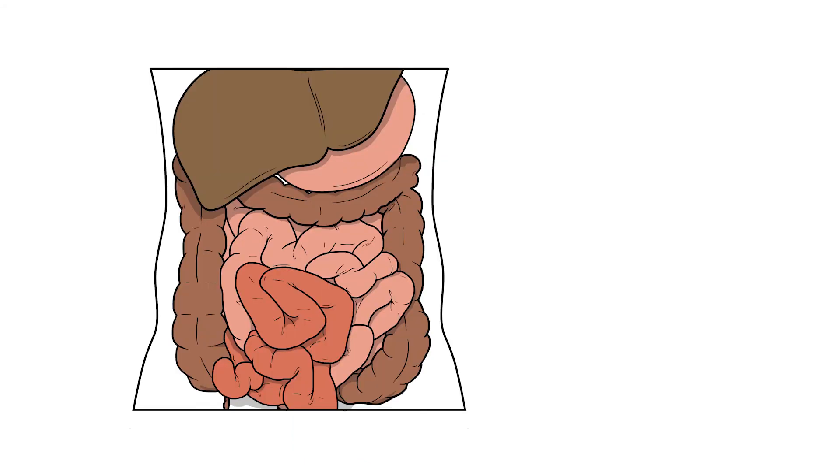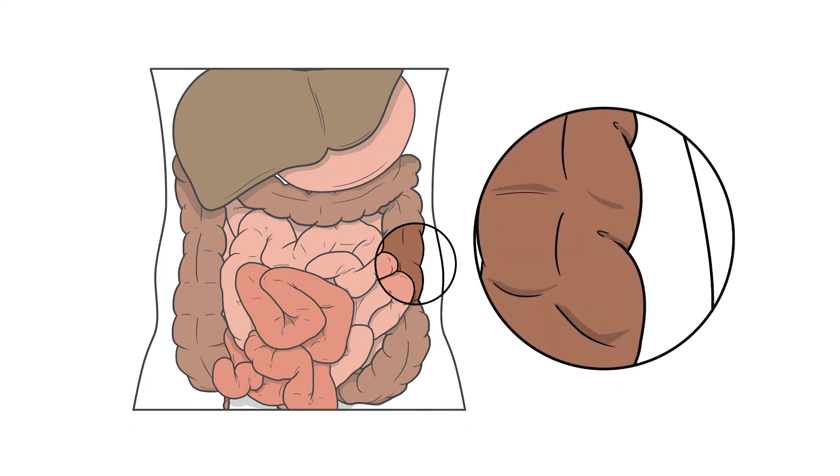Well, the peritoneum is a membrane that's found in the abdomen and is composed of two layers. The parietal peritoneum lines the inside of the body cavity. The visceral peritoneum lines the outside of the organs.